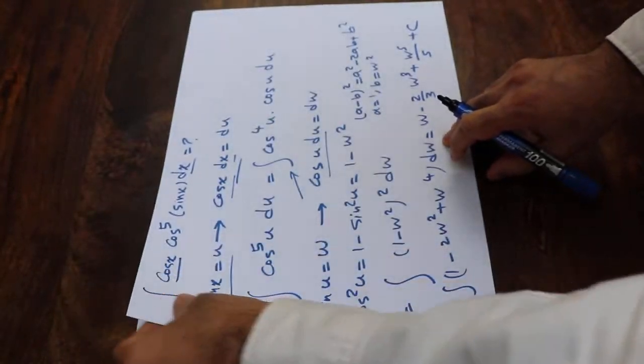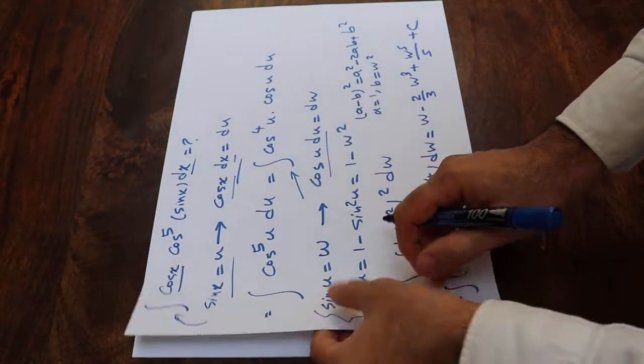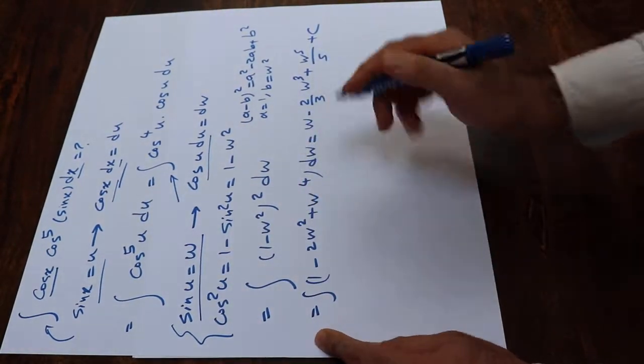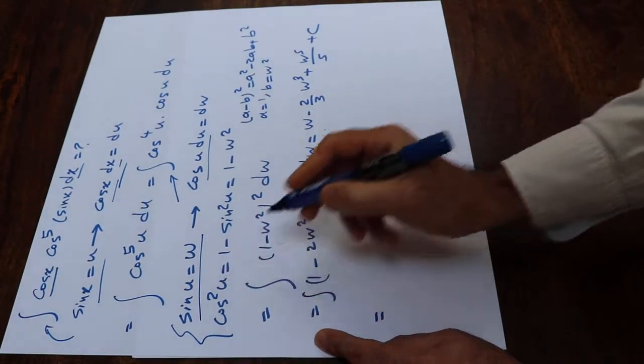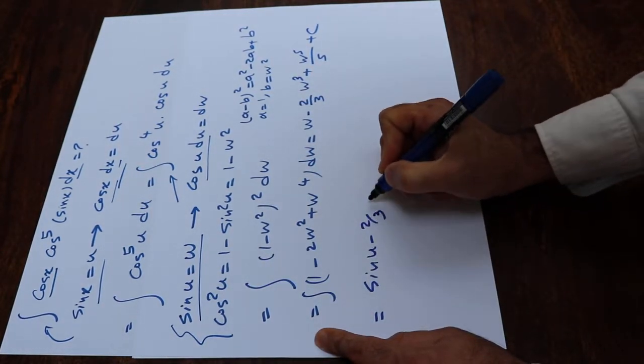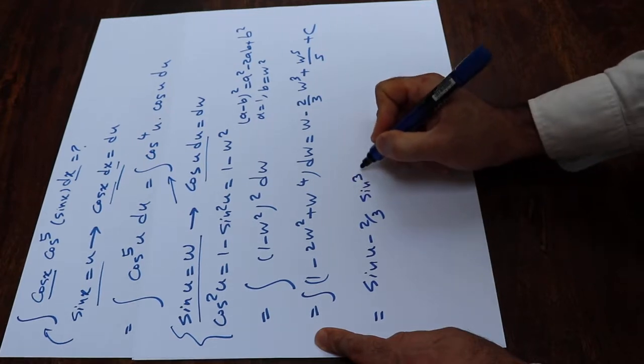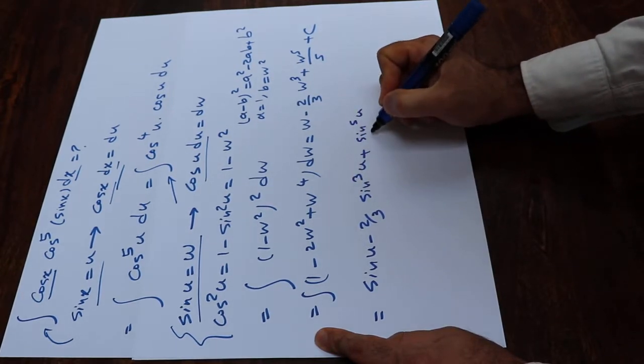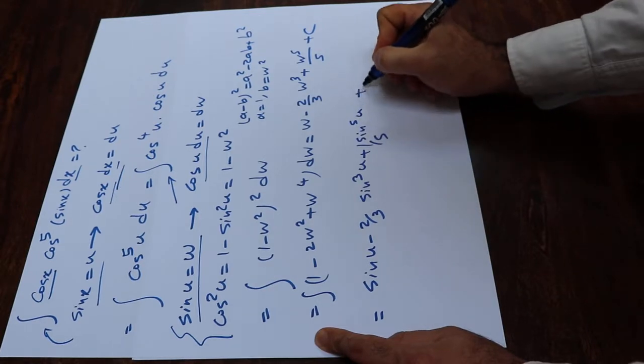Now you need to substitute the parameter w with the definition of w, which is given here. So this integral will be equal to sin(u) minus 2sin³(u)/3 plus sin⁵(u)/5 plus c.